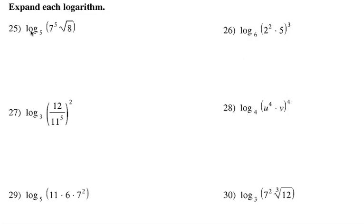Number 25 says log base 5 of, notice that is a combined product. Let's take it one step at a time. First of all, that's a product there, right? So that becomes the addition. Log base 5 of 7 to the 5th plus log base 5 of 8, the square root of 8, which is really 8 to the 1 half power. We can go ahead and convert that. It's that part plus that part, log base 5.